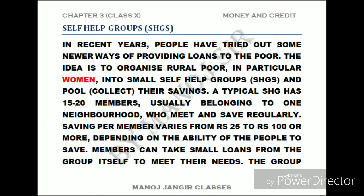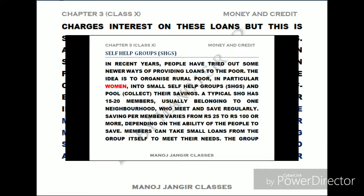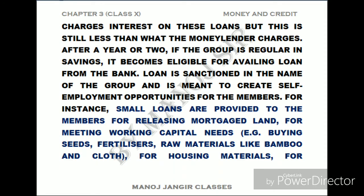SHG members usually belong to one neighborhood and meet and save regularly. Savings per member vary from 25 to 100 rupees or more, depending on the ability of the individual to save. People can take small loans from the group itself to meet their needs. The group charges interest on these loans, but it is still less than what moneylenders charge.